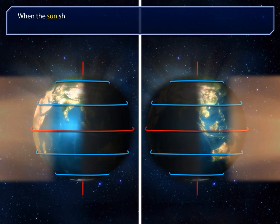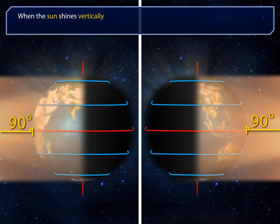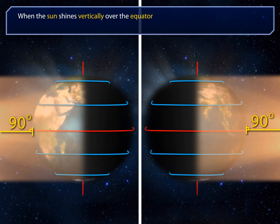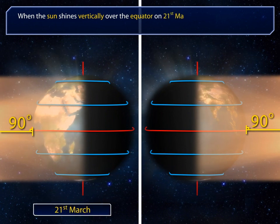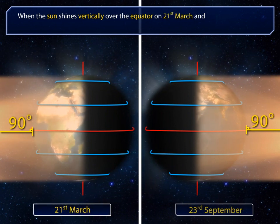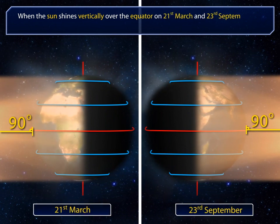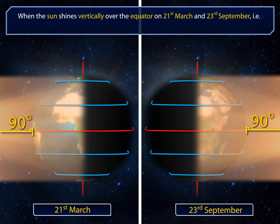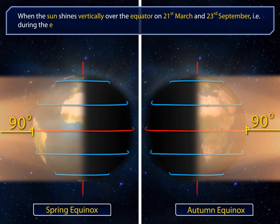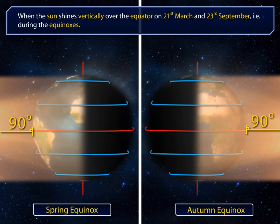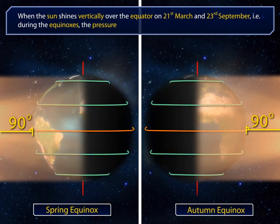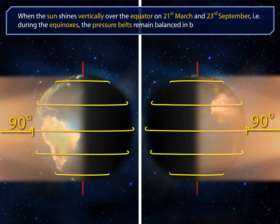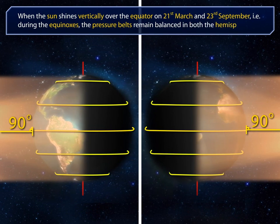When the sun shines vertically over the equator on 21st March and 23rd September — that is, during the equinoxes — the pressure belts remain balanced in both the hemispheres.